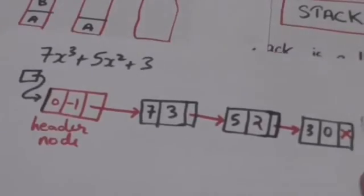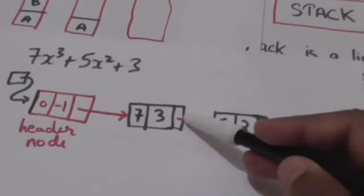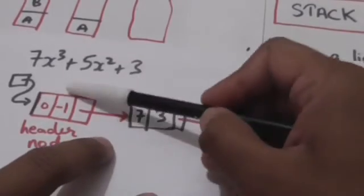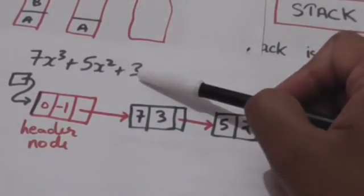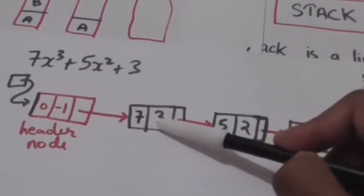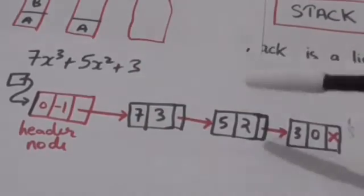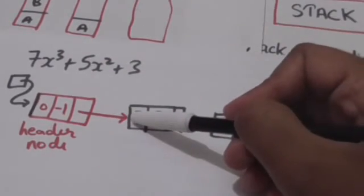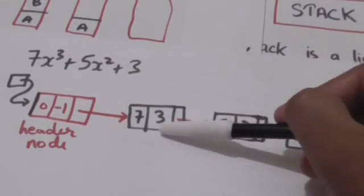Now this is the linked list which represents the polynomial 7x³ + 5x² + 3. This node represents the term 7x³. Here the coefficient is 7 and the power of x is 3.